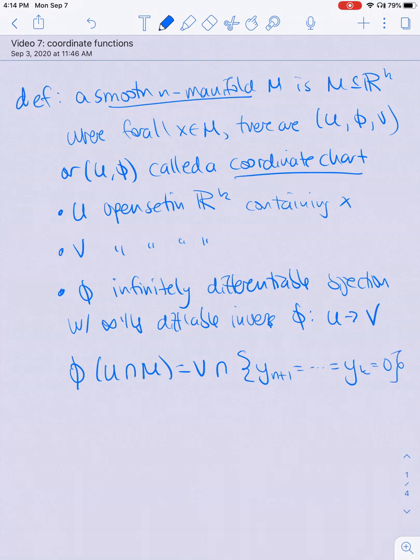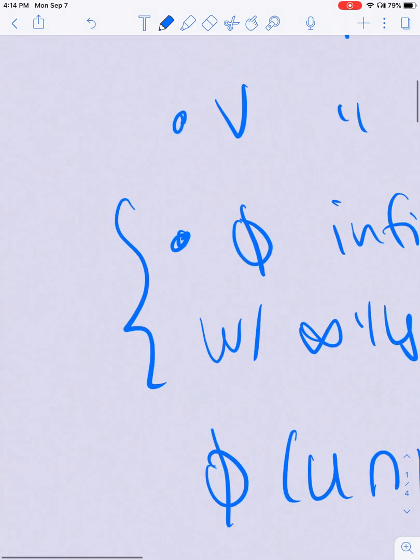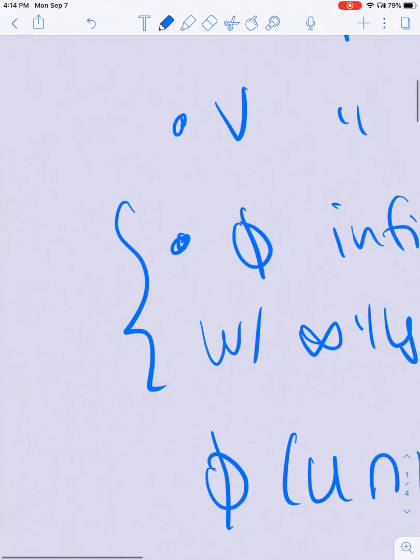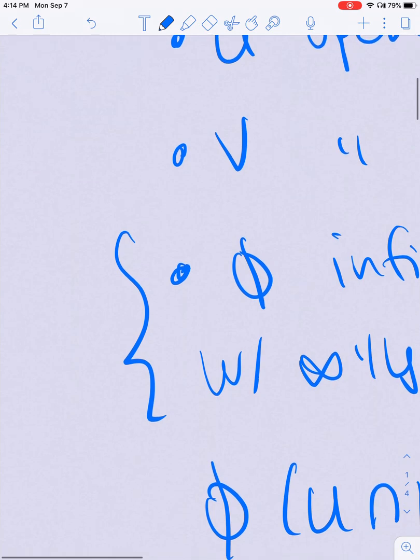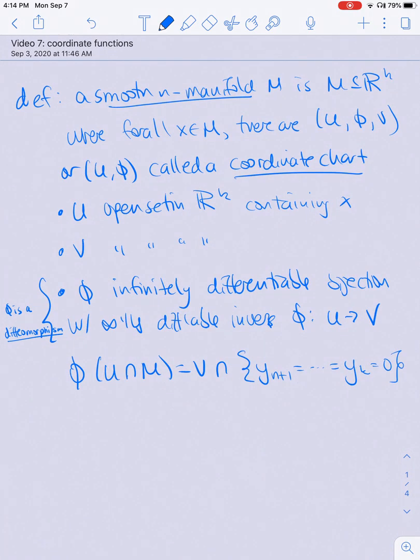If any map in general satisfies these properties—infinitely differentiable and a bijection with an infinitely differentiable inverse—then we say phi is a diffeomorphism. So that's a word we could use more generally.